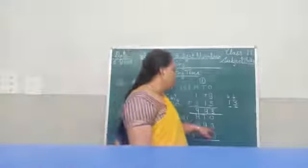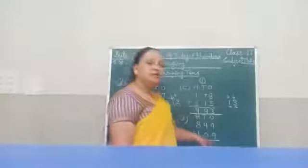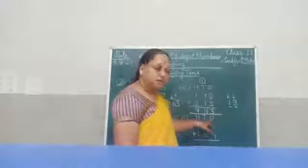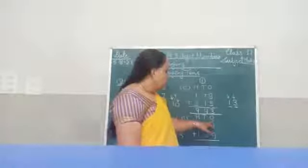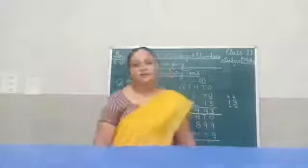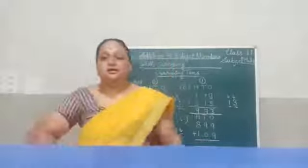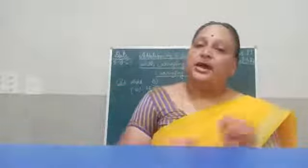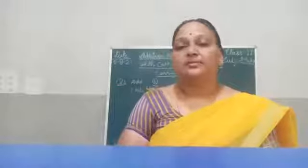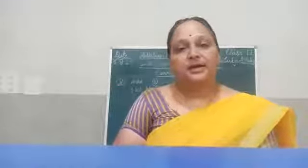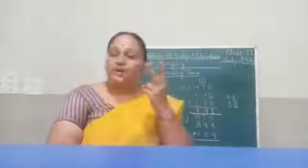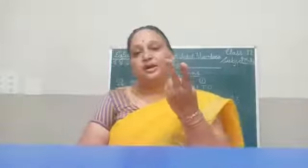849 plus 109. We will start from the ones place. There are 2 numbers: 9 and 9. Whenever there are same numbers, we can add them using the times table. 9, two times, gives 18.